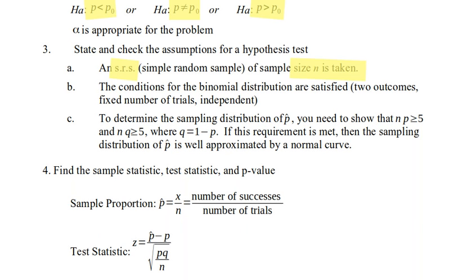There's a third requirement. 3c requires us to determine the sampling distribution of p hat. And to do that, we need to check that np and nq are both greater than or equal to 5. In other words, there's enough of both results, given our sample size and the population proportion that we've been told, that we have a big enough sample. This is basically ensuring that n is big enough.